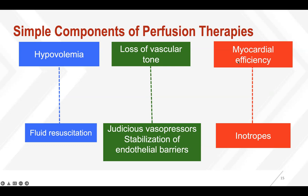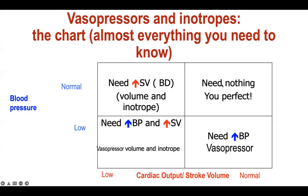Understanding the simple components of perfusion therapy: if you're hypovolemic, you need fluid. If you've lost vascular tone, you're going to need judicious vasopressors and some limitation of fluid, because more fluid in the setting of lost vascular tone creeps into the interstitium and destabilizes the endothelial lining. Then of course, myocardial efficiency - meaning I'm going to consider inotropes. In general, I look at vascular tone: if heart rate is up and blood pressure is down, particularly diastolic pressure and MAP, you're going to need vasopressors quickly. But I always encourage evaluation of stroke volume - if I don't have that capability, then I use systolic blood pressure.